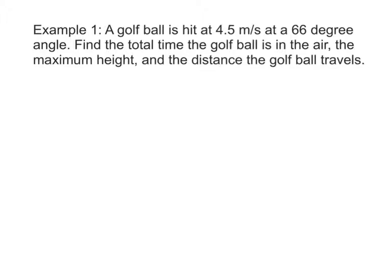For your diagram, show the golf ball being hit, reaching a high point, and then going back to the ground. In the x direction we have constant velocity. In the y direction, we start out fast, get slower, come to rest at the top, and then get faster on the way down. Our give-and-find is our xy chart.